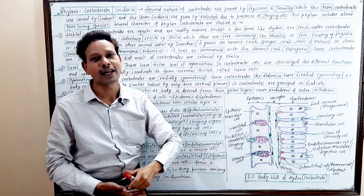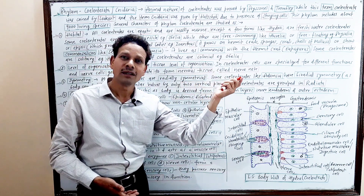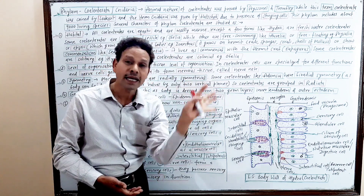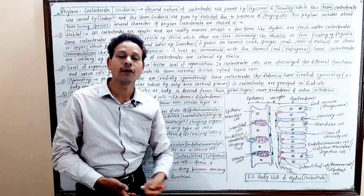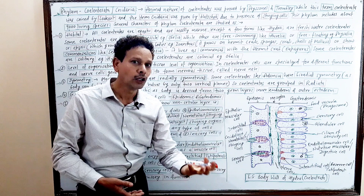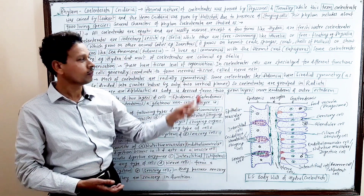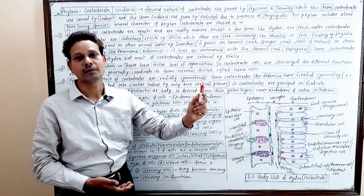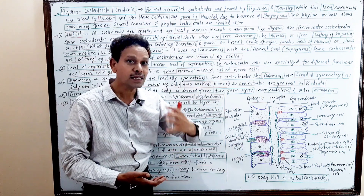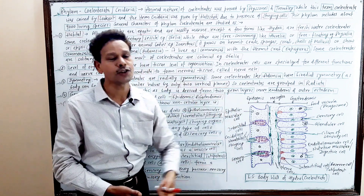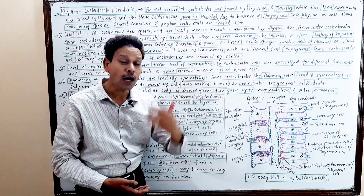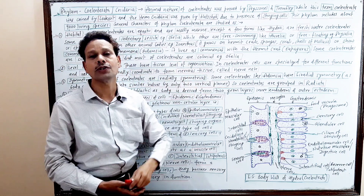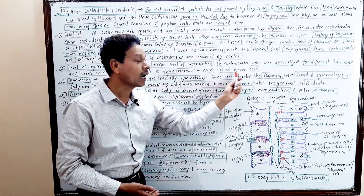Before this phylum, we already studied Phylum Porifera, which has only cellular aggregation — a cellular level of organization. In Phylum Protozoa, it is the acellular level of organization. But in Phylum Coelenterata, there is tissue level of organization — cells aggregate and work in coordination. The nerve cells coordinate to form nervous tissue, collectively named nerve nets.